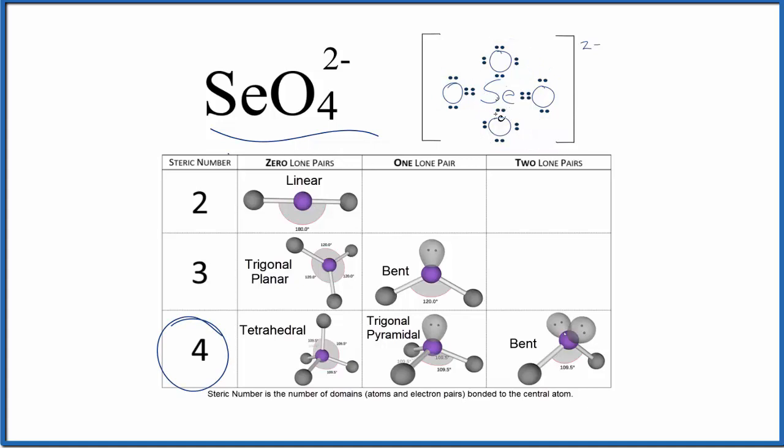Then we want to look at the number of lone pairs on the central atom. All of these electron pairs here are involved in chemical bonds with the oxygen atoms, so we don't have any lone pairs. We have zero lone pairs.